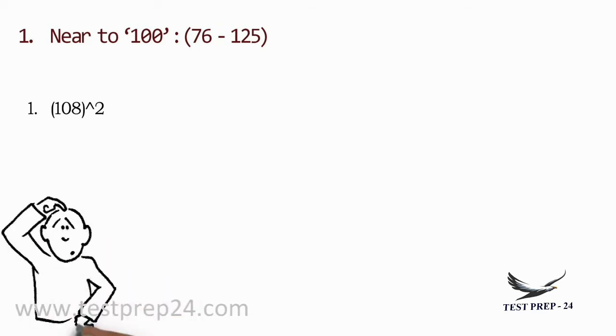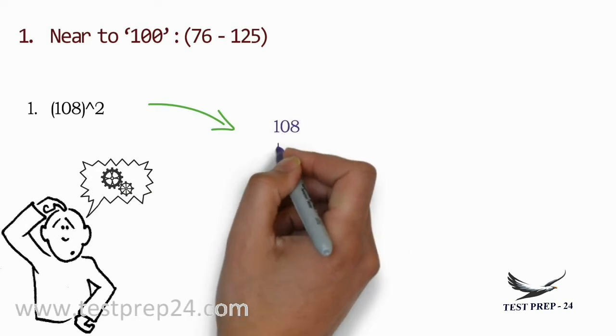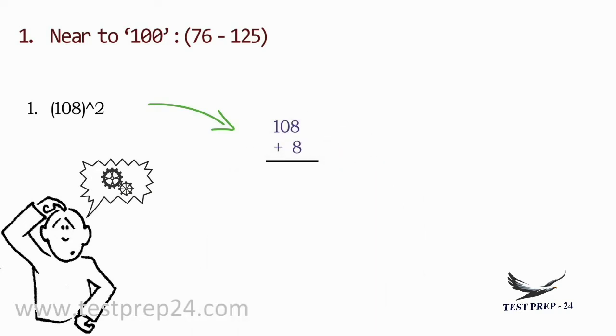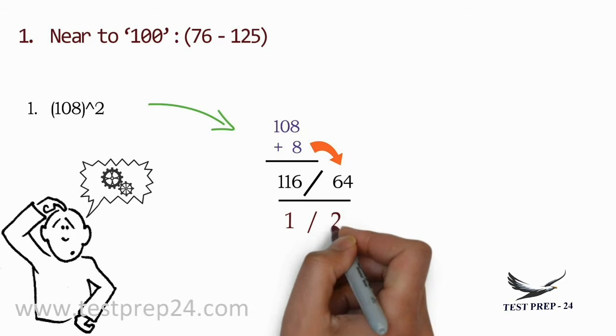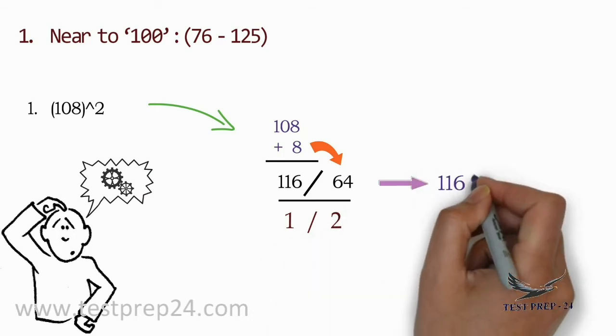First example: 108 whole square. To find the square of 108, find how much 108 is greater than 100. This 108 is 8 greater than 100, so you will add 8 to 108 and it will be 116. Your second part is 8 square, so the value will be 64.